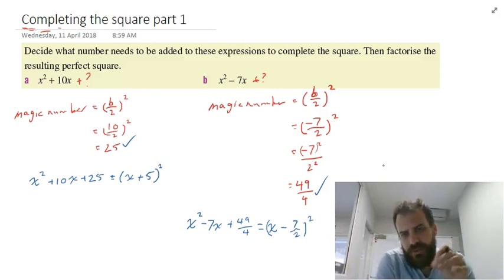That's step one of learning how to complete the square. We don't know how to complete the square yet, but we're getting a step closer. Find the magic number. It's the b value over 2 squared.